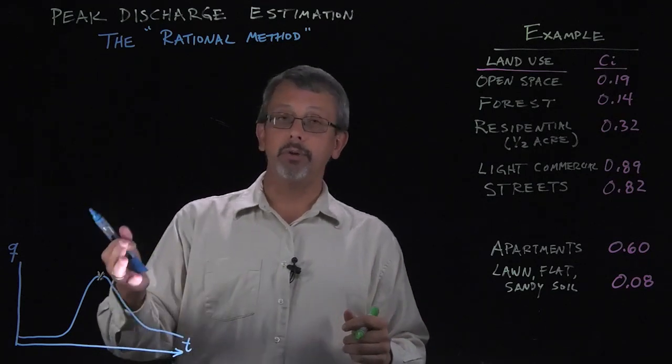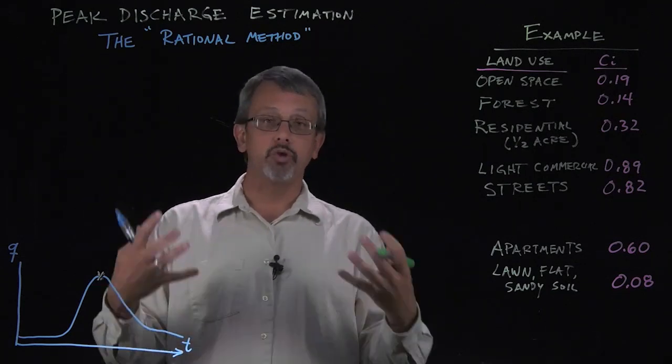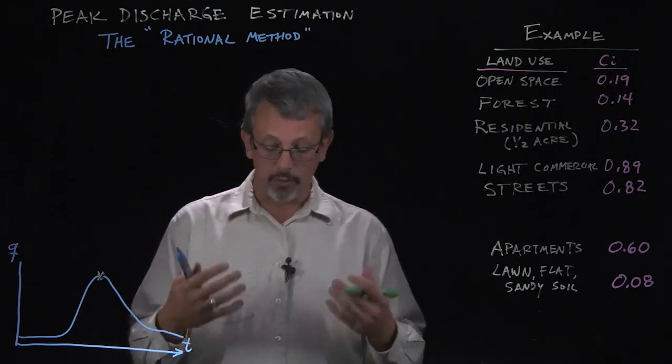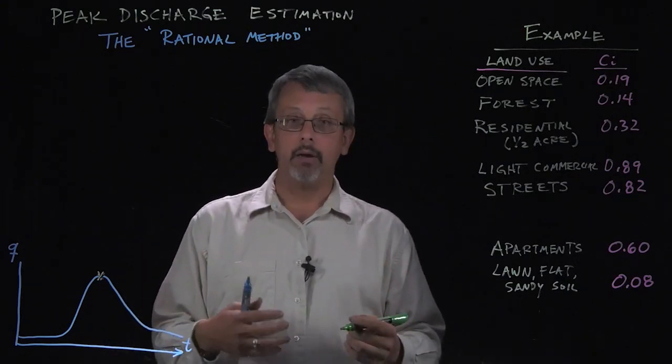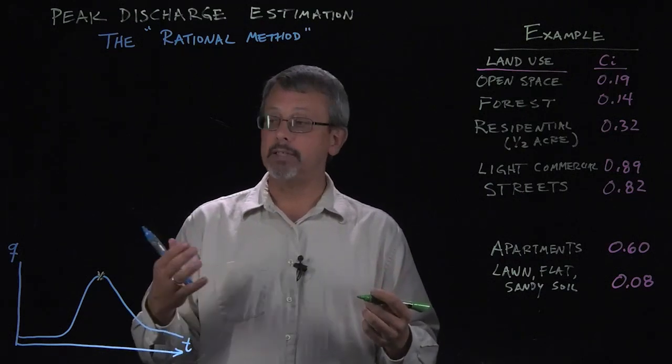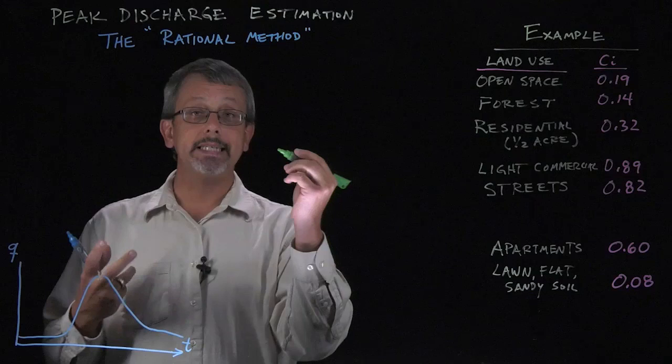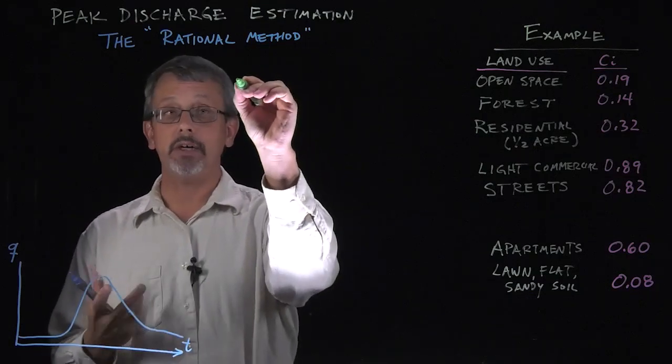So if we're interested in doing that, we're trying to figure out how much runoff is coming off, there's a very simple method of doing this called the rational method. And what this rational method does is it relates the discharge q to the intensity of the rainfall using a very simple equation.